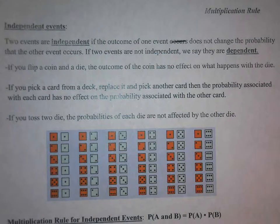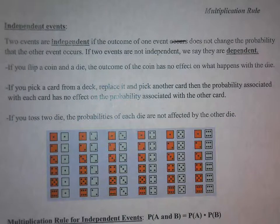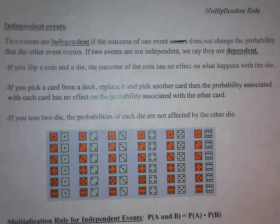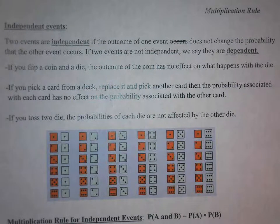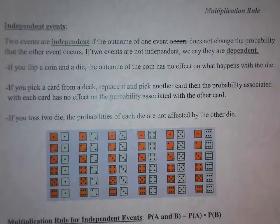Now if you did not put the card back, then when you chose the second card there are only 51 cards left. So if you chose the ace of hearts on the first card, the ace of hearts is no longer in the deck. That would affect the outcomes and the probabilities associated with the second card. So those events will be dependent if you did not replace the card.